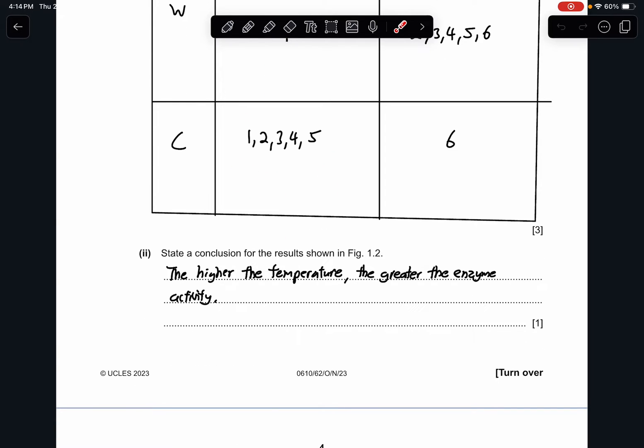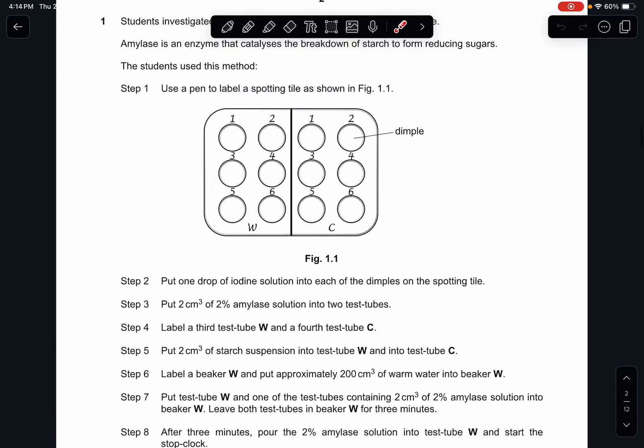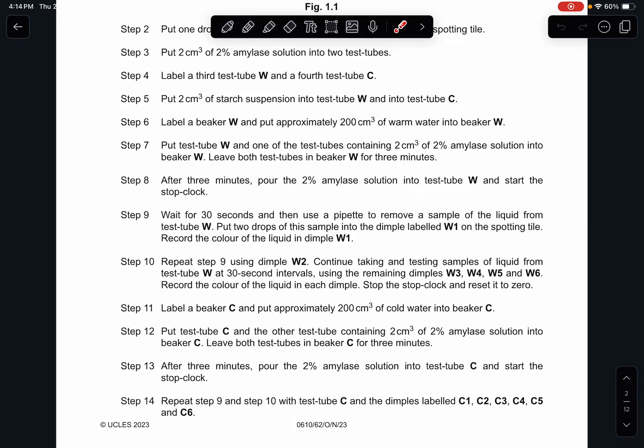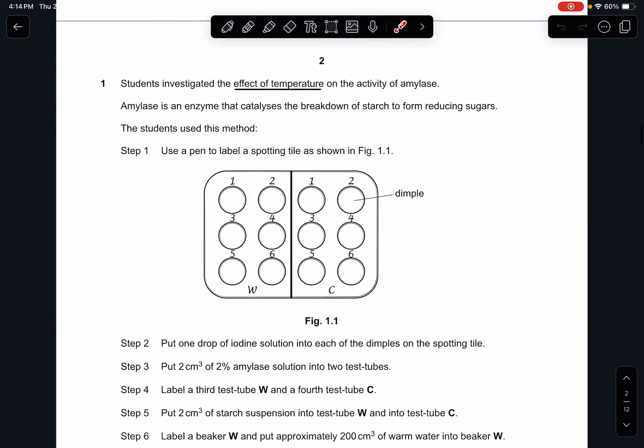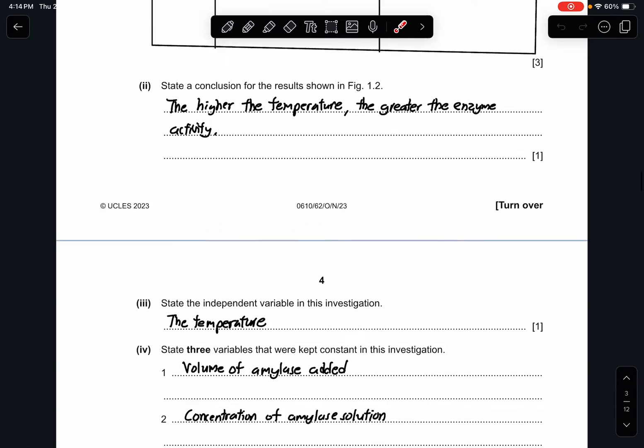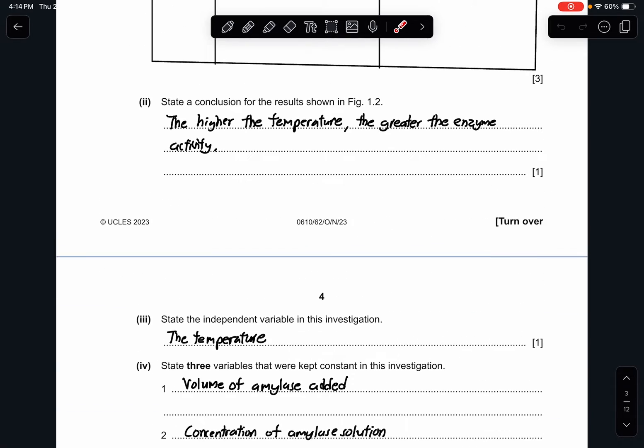For part 2, state the conclusion for the result shown in figure 1.2. For this one, it's quite implicit because you might not be able to find the change in temperature here. However, in the first sentence, it says students investigated the effect of temperature on the activity of amylase. So of course, a conclusion will be when the temperature increases, the greater the enzyme activity.